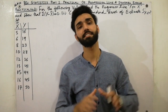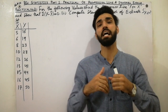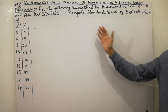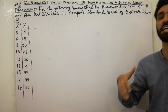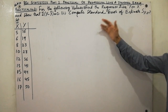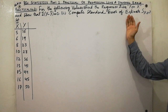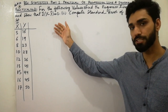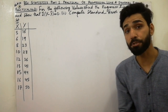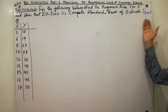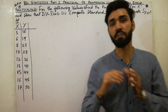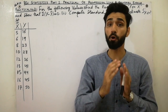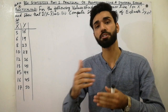Salam alaykum, friends. Today I am here to explain how to solve this practical regression problem, in which we will find the regression line y on x, show that Σ(y − ŷ) = 0, and also compute the standard error of estimate s(y.x). This lecture is very interesting, so don't skip any step because each step is very important.